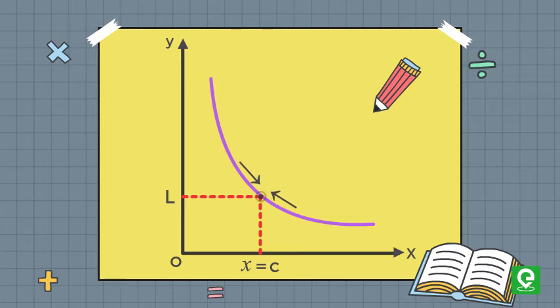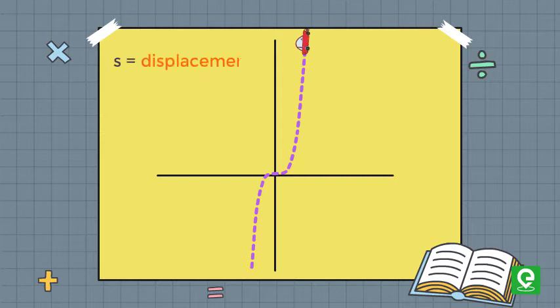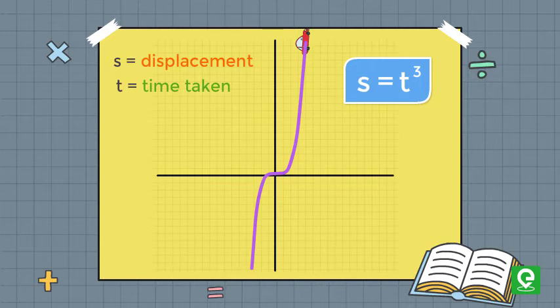For example, let's say a car is moving in such a way that its displacement s is given by the relation s = t³ where t is the time taken. Suppose we want to know that for such a relation what will the instantaneous velocity be, say after two seconds?